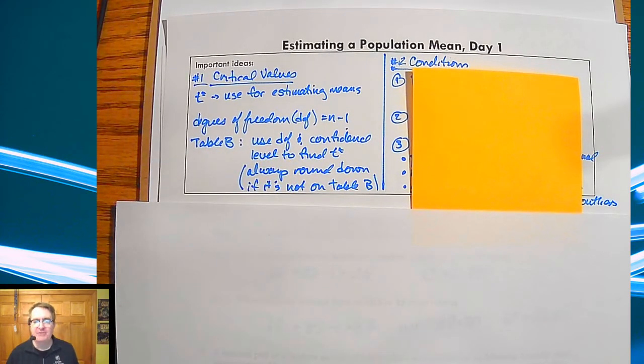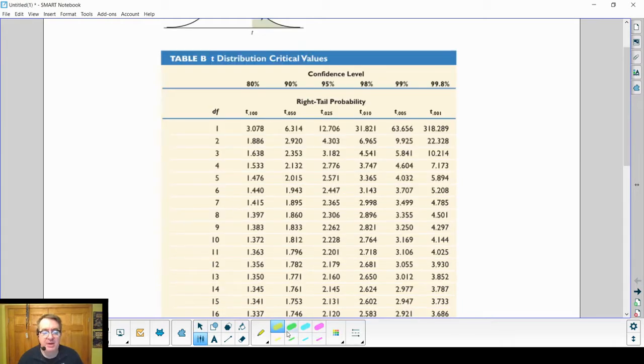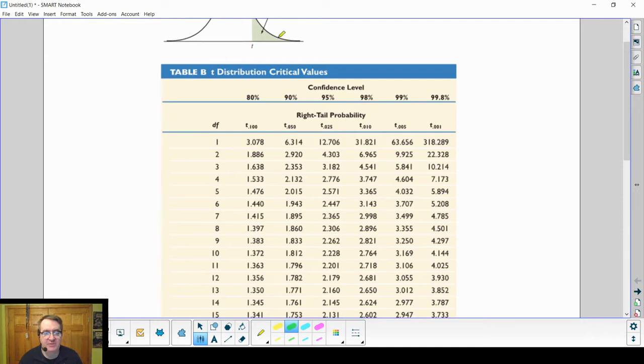Because of that, Table B - you're going to use degrees of freedom and confidence levels to find t, and you're always going to round down. Let's say if we had 10 degrees of freedom and we wanted this tail up here to be five percent, so that means the right hand tail would be five percent. We're looking for a confidence level of 90 because we're going on both sides. I would go 10 and over here, and I would use the t-star value of 1.82.